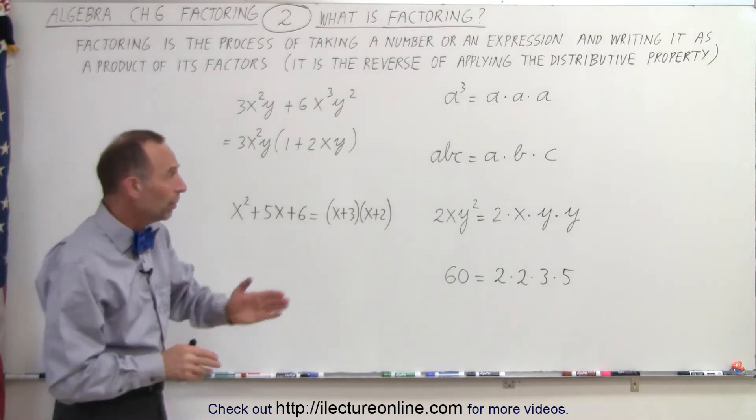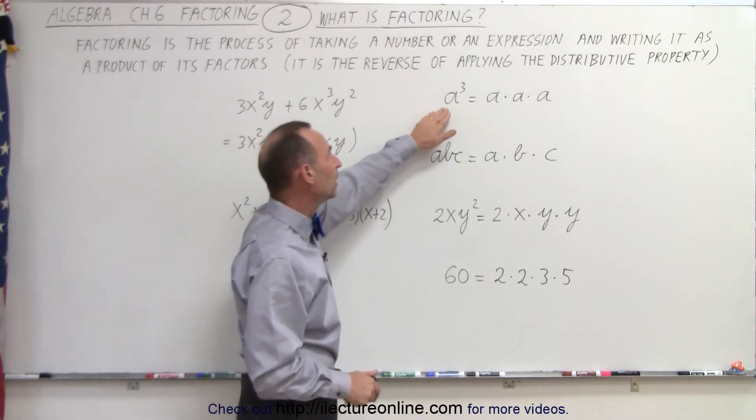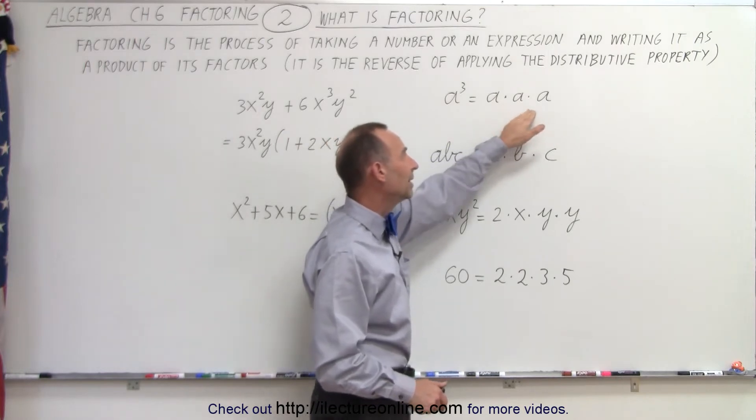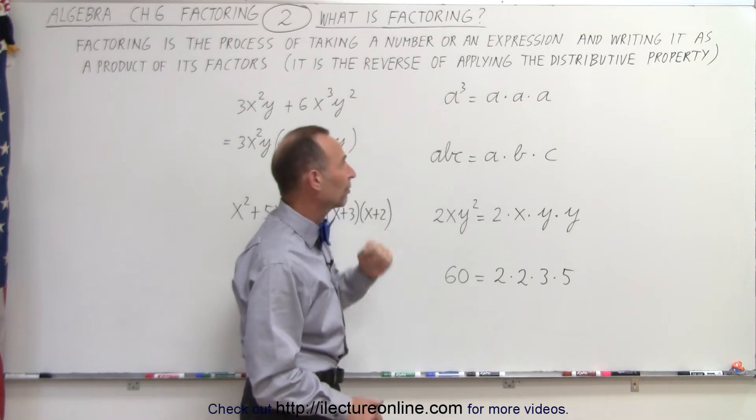Now in its simple form, we have some examples on the right. For example, we can have a cubed and write it as a times a times a. Since these three a's are the factors of a cubed, we can write it as a product of its factors.